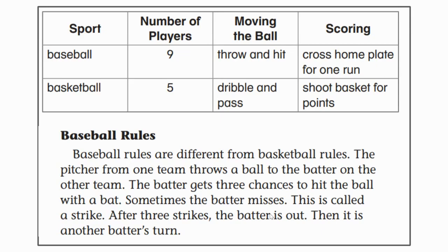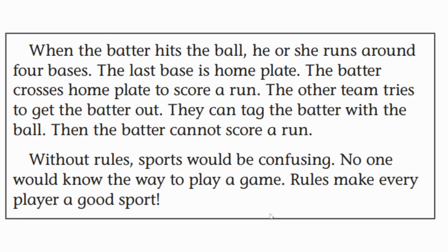Baseball rules. Baseball rules are different from basketball rules. The pitcher from one team throws a ball to the batter on the other team. The batter gets three chances to hit the ball with a bat. Sometimes the batter misses. This is called a strike. After three strikes, the batter is out. Then it is another batter's turn. When the batter hits the ball, he or she runs around four bases. The last base is home plate. The batter crosses home plate to score a run.